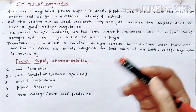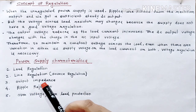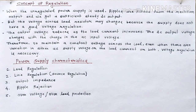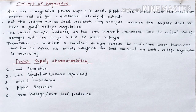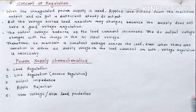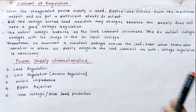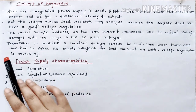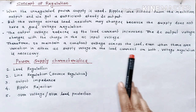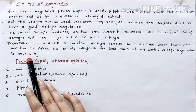The DC output voltage changes with the change in the AC input voltage. When the AC input voltage changes, the DC output voltage also changes — but what is the benefit of that? We should be getting a constant voltage at the output. If it is varying up and down, can you call it DC? No, you cannot. So this is not giving us the complete DC property. We need DC response, so we need to regulate it. Therefore, to maintain constant voltage across the load even when there are variations in either AC supply voltage or load current or both, voltage regulation is necessary.